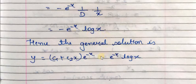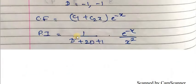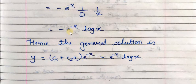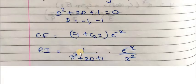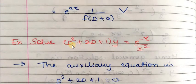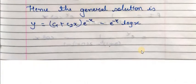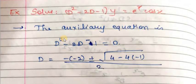This is the required PI: minus e raised to -x into log x. The general solution is y = CF + PI, where CF = (c₁ + c₂x)·e raised to -x and PI = minus e raised to -x·log x. This is the required general solution of D² + 2D + 1 y = e raised to -x over x squared.